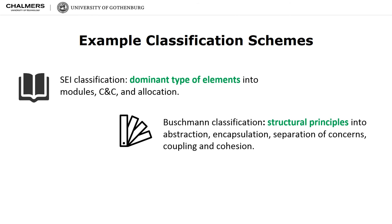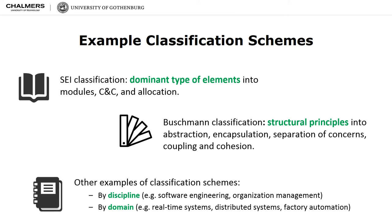Bushman describes a classification scheme that organizes best practices according to granularity of abstraction, functionality, and structural principles. The granularity of abstraction separates design best practices into three categories: architectural frameworks, design patterns, and idioms. Other classification schemes have organized styles by discipline, such as software engineering styles versus organization management styles, or by their applicability domain, such as real-time systems versus distributed systems.